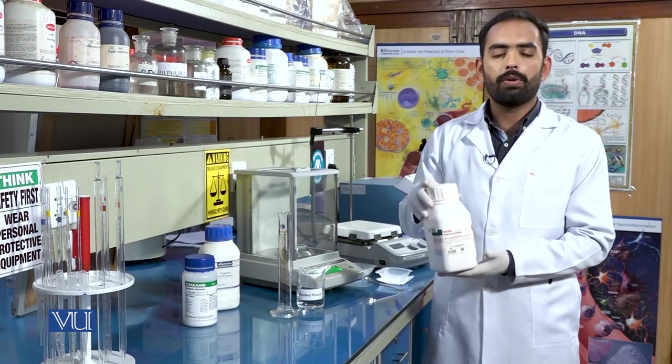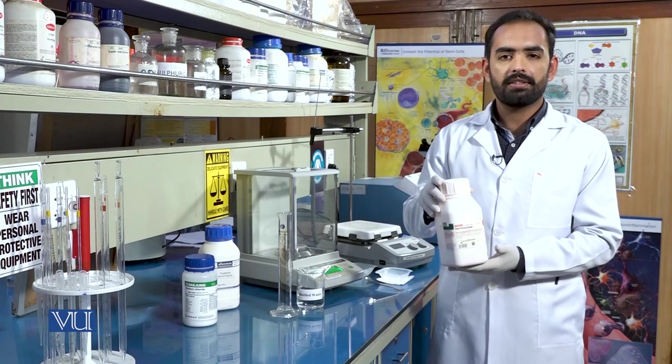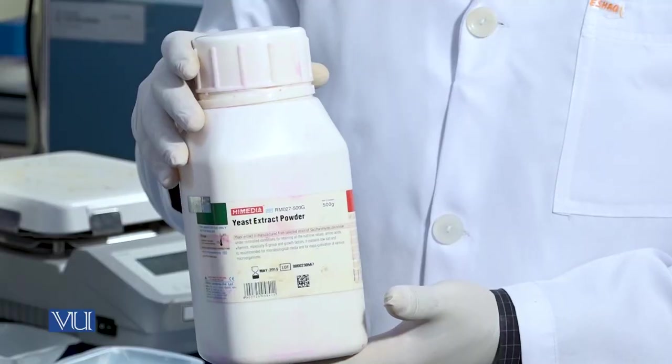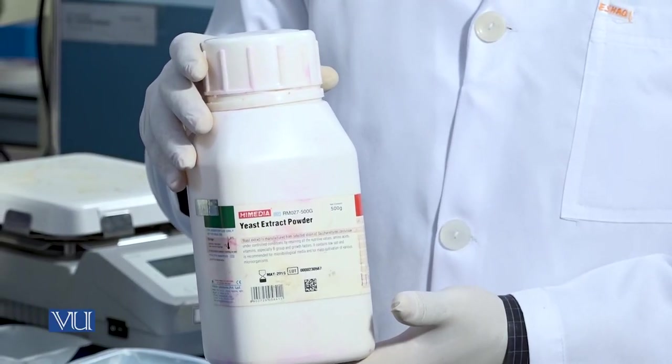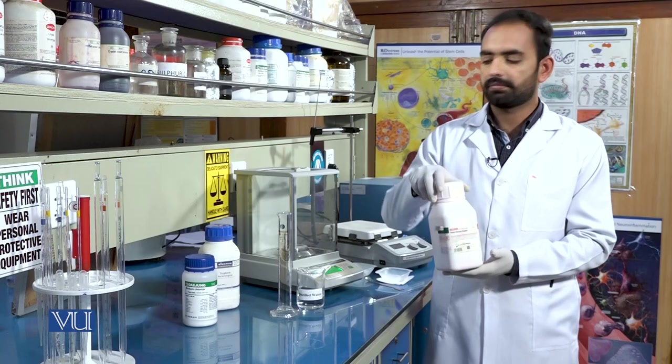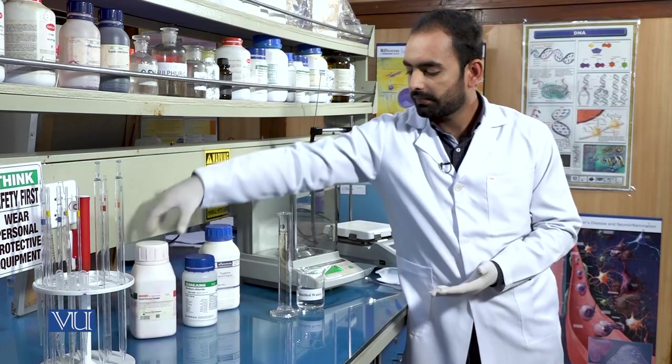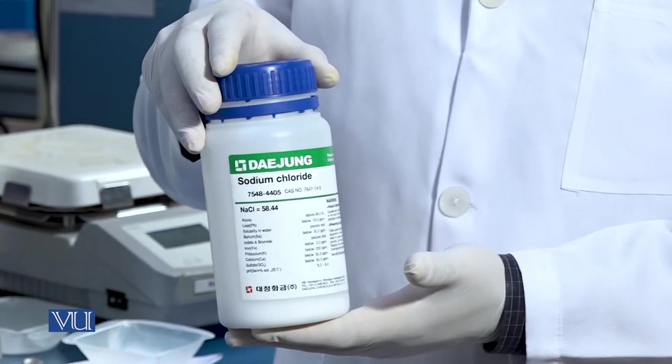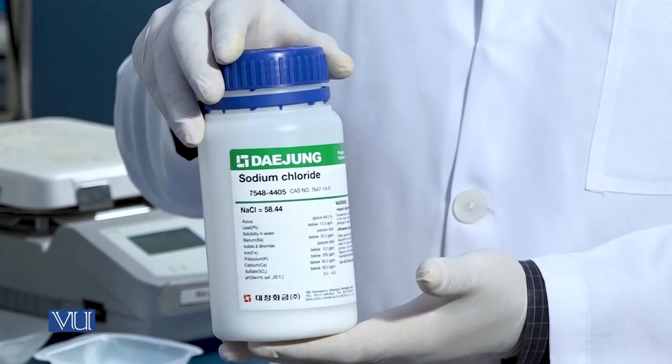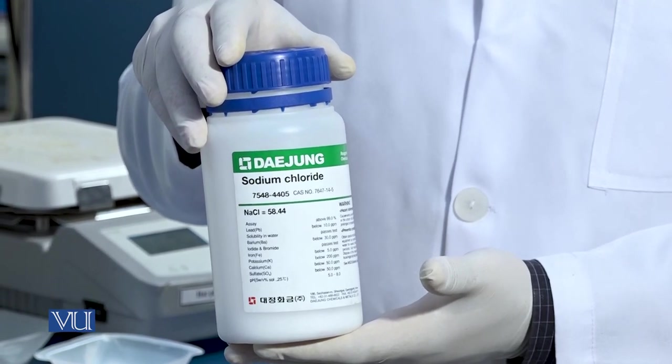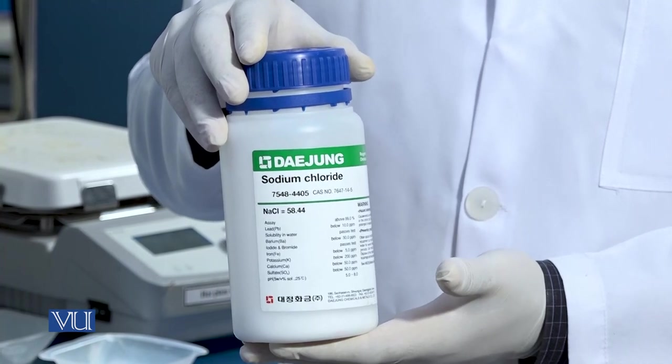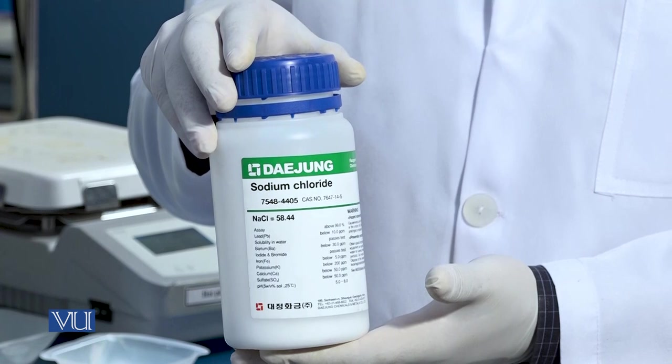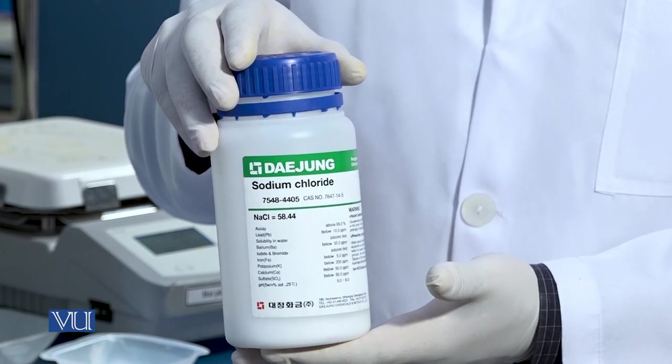Next we have yeast extract. Yeast extract contains all of the nutrients required for the growth of bacteria. Next we have NaCl. Microbes in particular use NaCl as a way to balance osmolytes in the medium, means not too much salty, not too much wet.